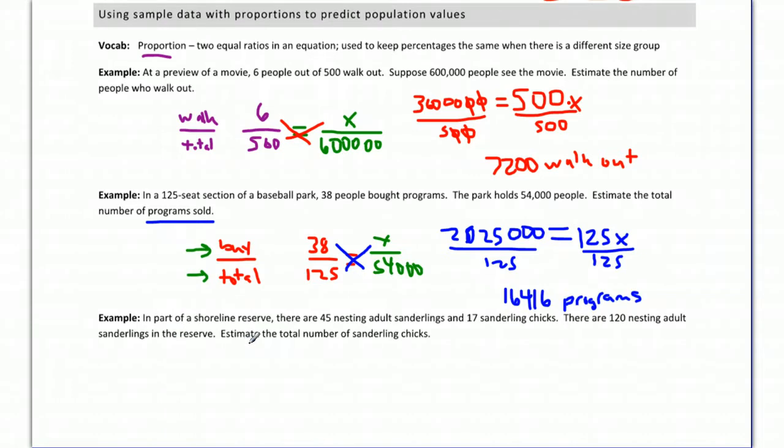Example: In part of a shoreline reserve, there are 45 nesting adult sanderlings and 17 sanderling chicks. There are 120 nesting adult sanderlings in the reserve. Estimate the total number of chicks. So I'm going to go, just to show that working upside down is just fine, I'm going to do adult over chicks. And then when we have adult over chicks, we have on the reserve 45 adults over 17 chicks. And that's equal to, this is our 120 nesting adult sanderlings in the reserve, so in the whole reserve we have 120 adults over an unknown number of chicks. That's what we're trying to figure out.